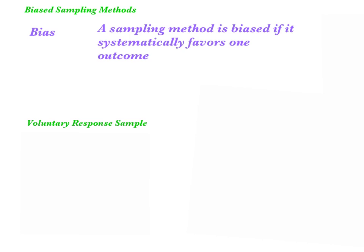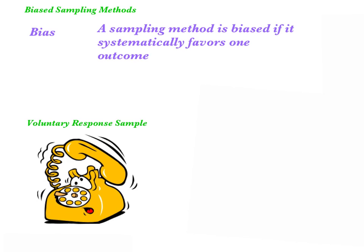The first type is a voluntary response sample. In these cases, people have the choice of responding to some type of general appeal. Here's one example: a phone poll where people call in to express their opinion or answer some question, or a call poll where people are called and then have the choice of responding or not. This is biased because people have a choice of whether they answer the question or not. In the case where people are actually calling in, they have the option to call in or not call in.